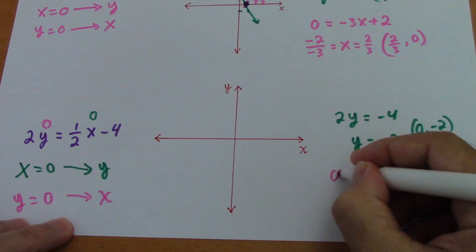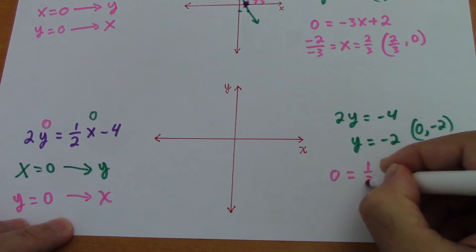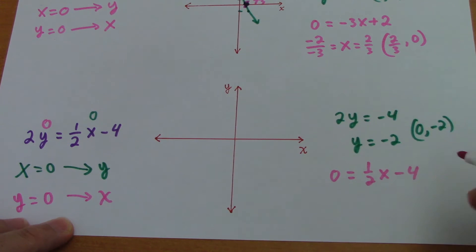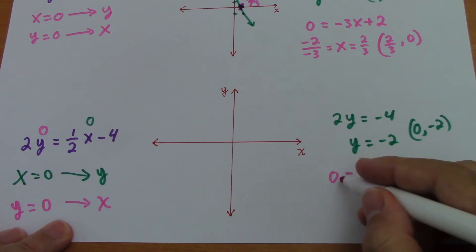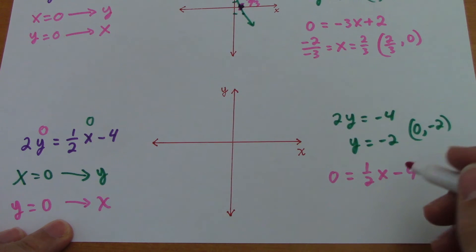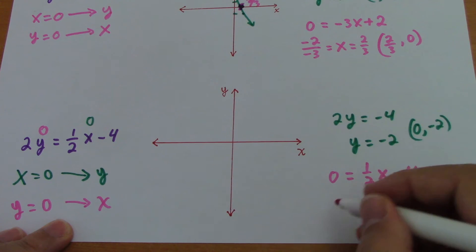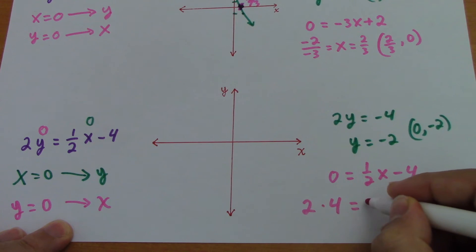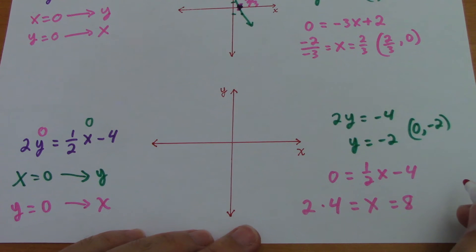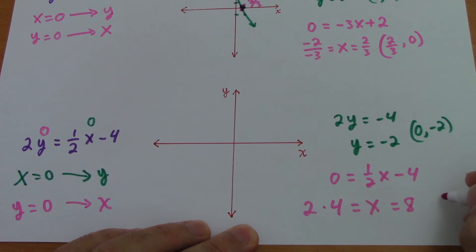So 0 equals 1 half of x minus 4. This 4 moves here to the left, or you add 4 on both sides, so that would be, and then you times by 2. 4 times 2 equals x, that would be equal 8.